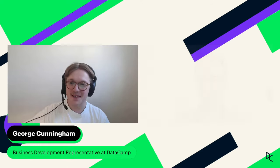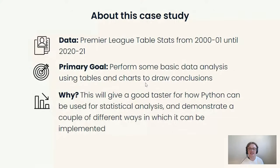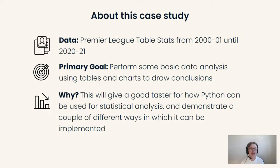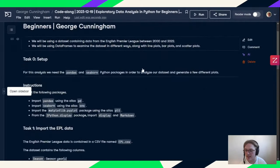Thanks for the introduction. As Ritchie mentioned, I'm currently in sales but have done a bit of coding in the past, so hopefully nothing too advanced today. This dataset is Premier League Table Statistics, going from the 2000-2001 season through 2020-2021. We're going to perform some basic data analysis, create a couple of tables, draw some conclusions, and then make a couple of charts — a good taster for how Python can be used for quick basic analysis. I'll switch across to the workspace now.